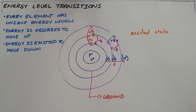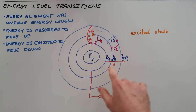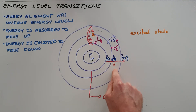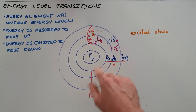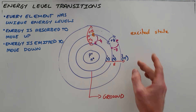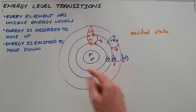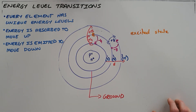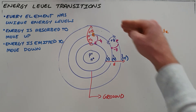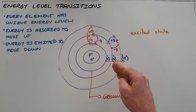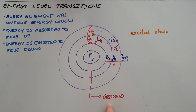In conclusion, every element has unique energy levels — for example, one element may have three and seven joules for its first two energy levels while another has five and twelve, and you can identify an element by looking at those energy levels. Secondly, in order for an electron to move up into an excited state it must absorb energy. Third, when an electron moves down from an excited state back to the ground state, energy must be emitted.